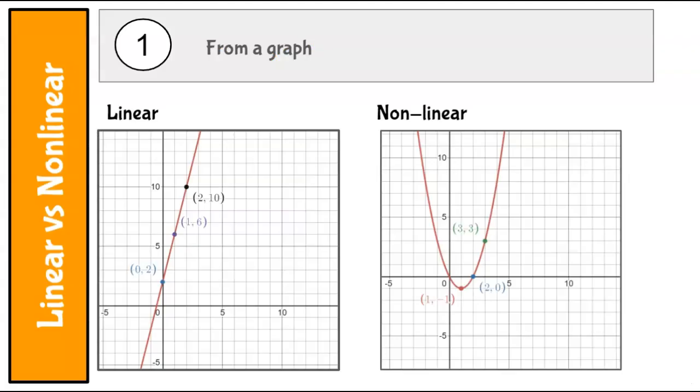Question number one. Now, from a graph, it's pretty easy to tell if something is linear or nonlinear. The root of this is line, and this makes a straight line. And it doesn't matter where this straight line is. If it's one continuous straight line, it is linear. So this is a linear graph.